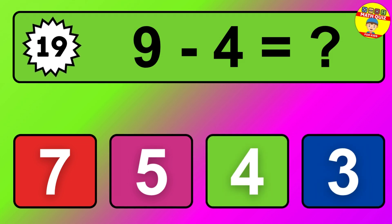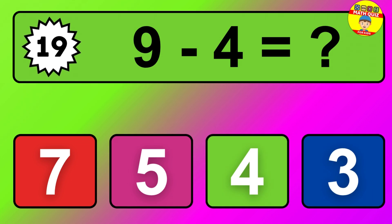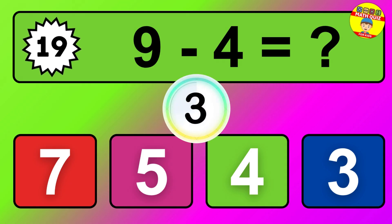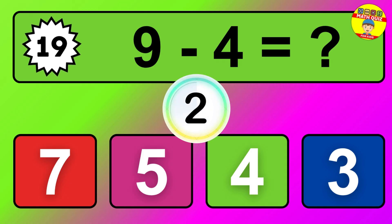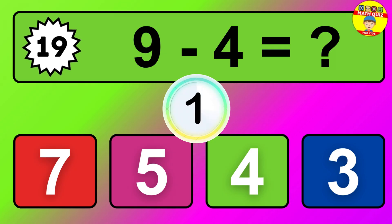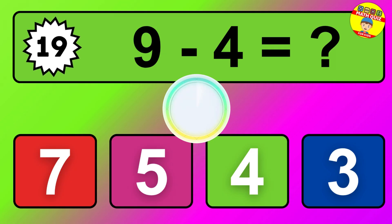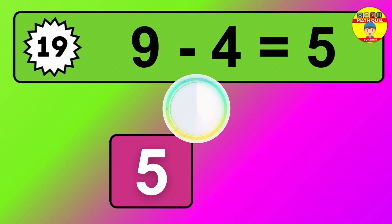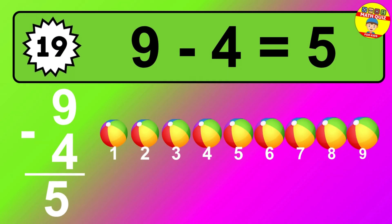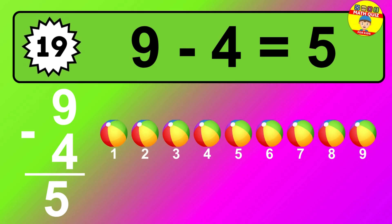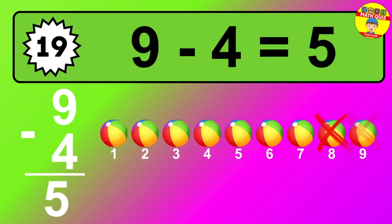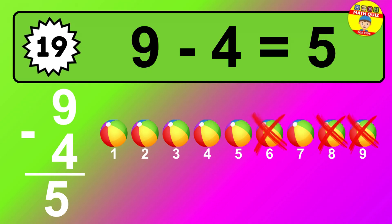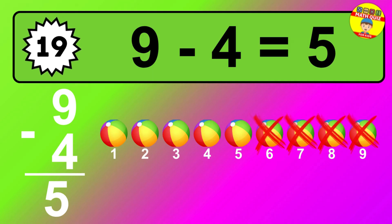Question 19. 9 minus 4 equals what? The answer is 9 minus 4 is 5. Let's count it: 1, 2, 3, 4, 5.